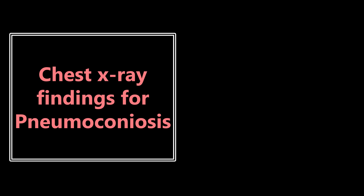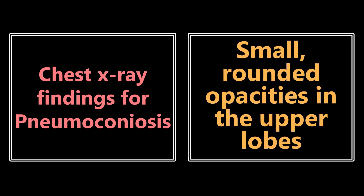The first high yield fact is the chest X-ray findings for pneumoconiosis — small rounded opacities in the upper lobes. They may give you a chest X-ray with these findings and ask you for the diagnosis, or give you a verbal readout in the vignette of small rounded opacities and want you to identify it that way. So it's really important to know both ways.